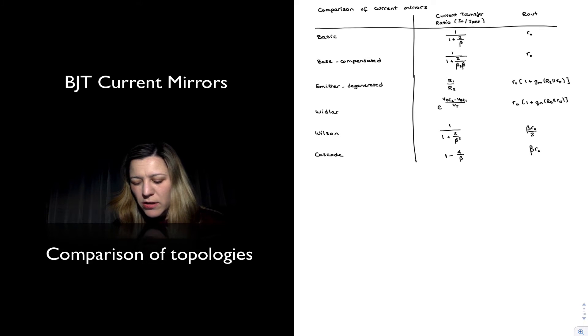As we saw, it's not always accurate to express this as 1 plus 2 over beta squared, because the collector current of transistor Q3 is much smaller than the collector current of the other transistors, and so the values of beta are not necessarily comparable. But it's an improvement with respect to the basic mirror nonetheless, same output resistance, higher transistor count.